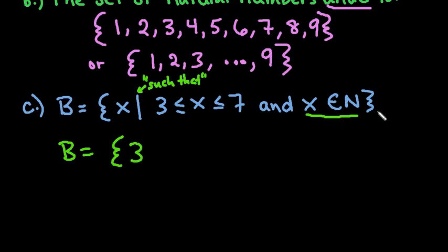If we didn't have the natural numbers constraint, this would be an infinite set because you could have 3.1, 3.2, 3.3. But by stipulating that it's a natural number, we know it has to be a whole number.